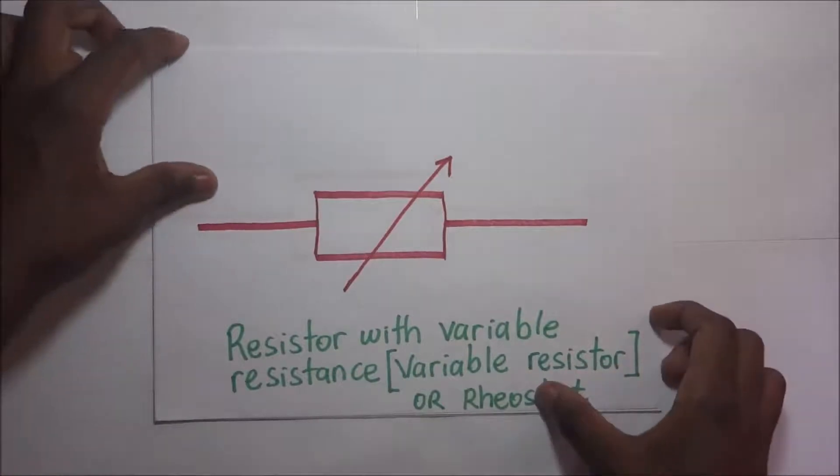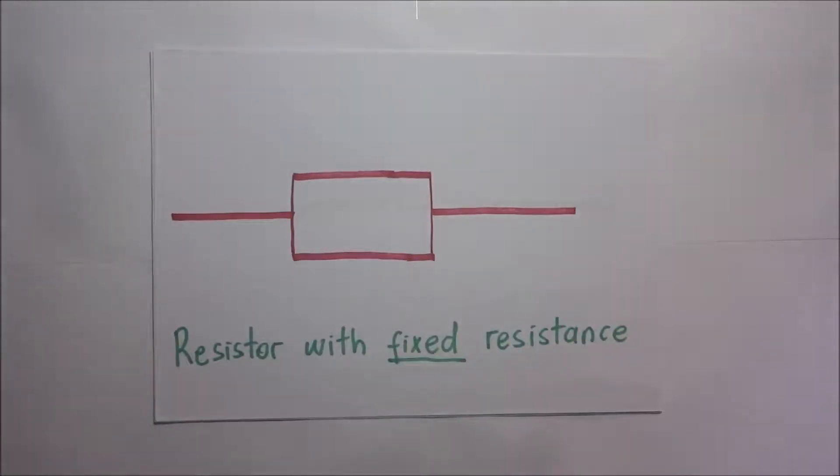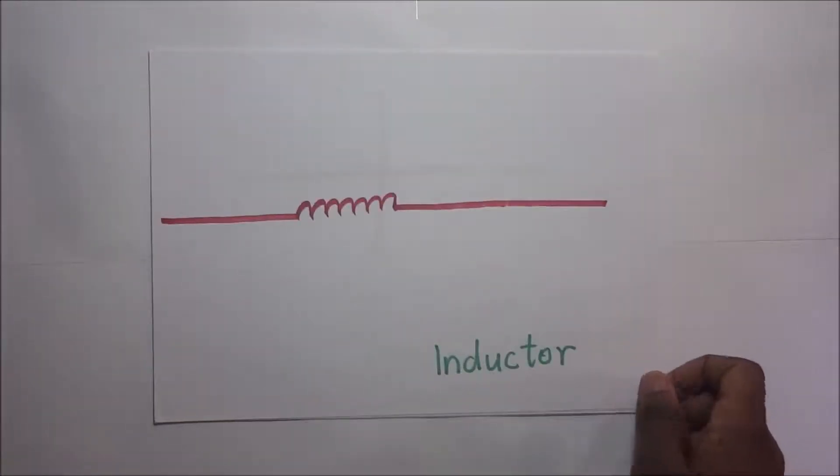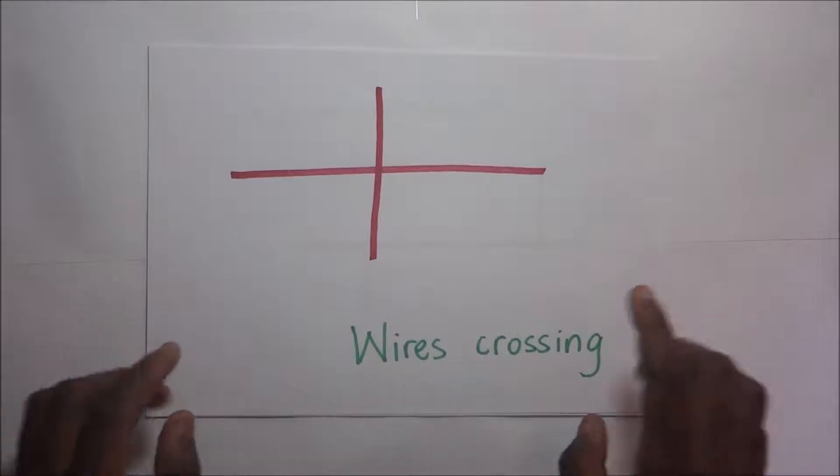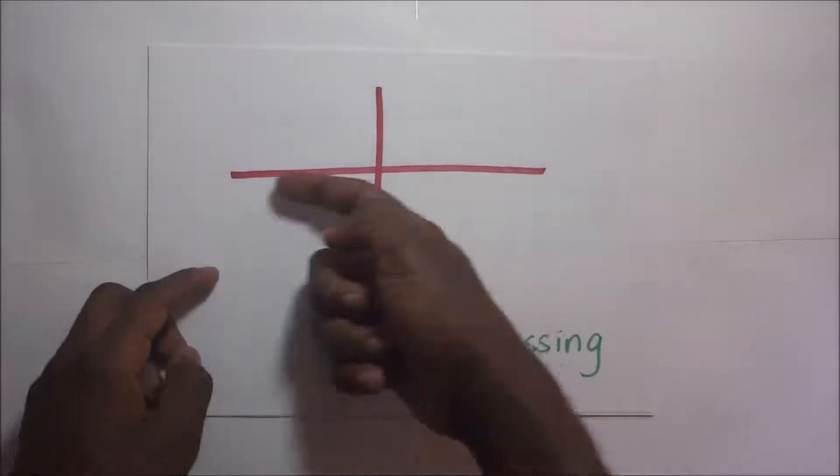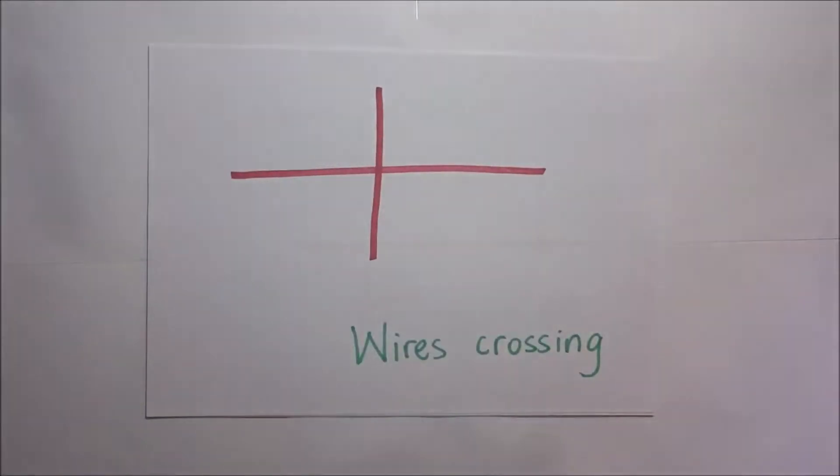Then right there is an inductor. This is how we represent it. Then those are wires crossing. In a circuit diagram, by wires crossing we mean that they are crossing each other and they are not connected at that spot.